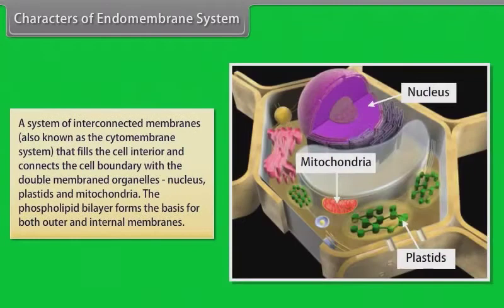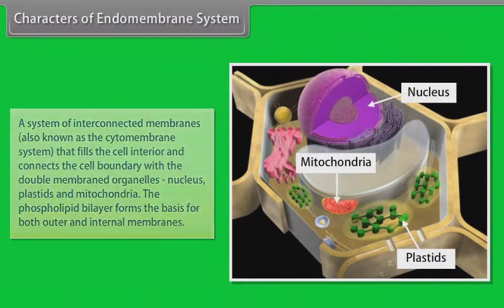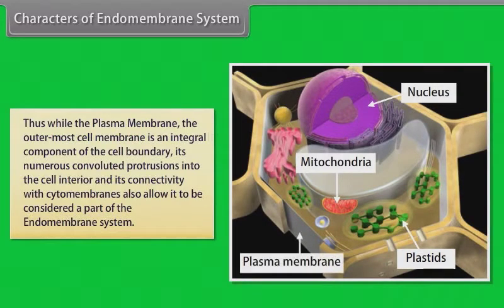The endomembrane system is a system of interconnected membranes, also known as the cytomembrane system, that fills the cell interior and connects the cell boundary with the double-membraned organelles — nucleus, plastids, and mitochondria. The phospholipid bilayer forms the basis for both outer and internal membranes. While the plasma membrane is an integral component of the cell boundary, its numerous convoluted protrusions into the cell interior and its connectivity with the cytomembranes also allow it to be considered a part of the endomembrane system.